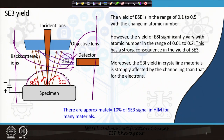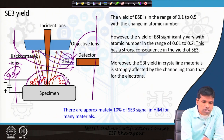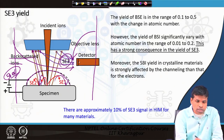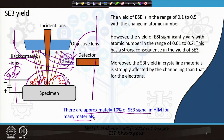If we put a grid around the sample and apply a negative potential of, say, 50 eV, then all electrons emerging with energy less than 50 eV will come back. But backscattered ions have much higher energy than 50 eV, so they will come out, strike the wall or pole pieces, and produce SC3. There are approximately 10 percent SC3 signal in the helium ion microscope for most materials.